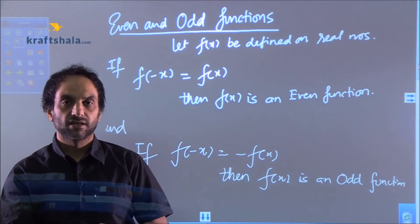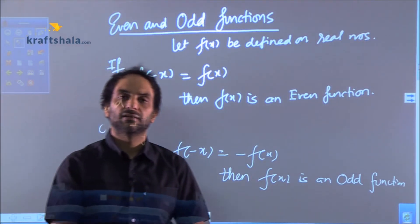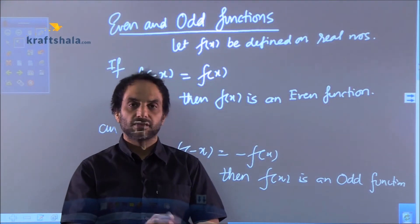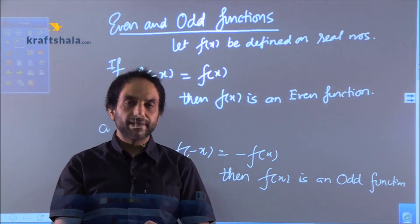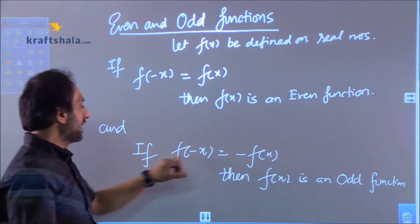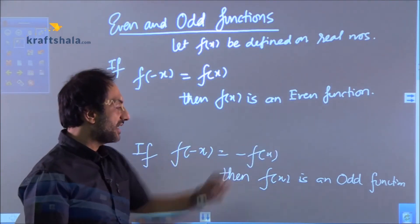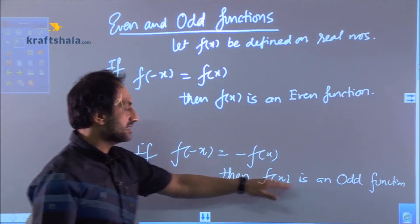And what is sin of minus theta? Minus sin theta. So your answer would be minus sin x. So f of minus x is now minus of f(x), so I will say that sin x is an odd function.